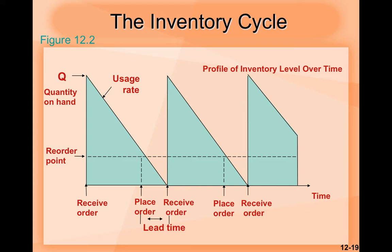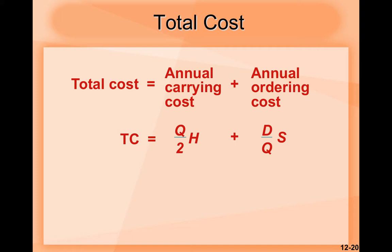Here is an example of a graph of an inventory cycle to give a clear idea of what this is about. Let's look at it for a few seconds. Now we have the total cost formula: total cost equals annual carrying cost plus annual ordering cost. This is the simplified form shown below so you can understand it better.